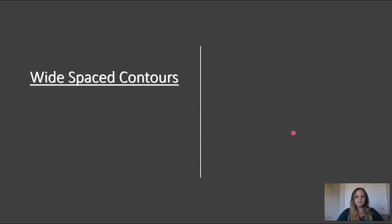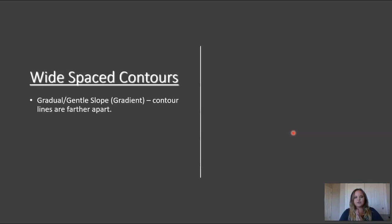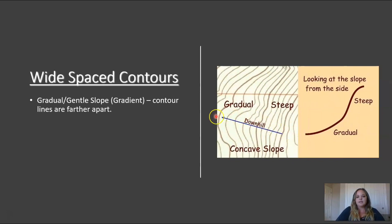Moving on to widely spaced contour lines — closely spaced contour lines show a steep slope, so widely spaced contour lines show that you are increasing in elevation over a long horizontal distance. We would see a gradual or gentle slope when our contour lines are further apart. Here on the left-hand side — potentially the west side — there's a contour line setup that is really far apart. Then once you get to a certain point, you see contour lines start to get closer and closer together, which means your elevation is changing drastically over a short distance — a steep slope. So we have a gradual slope first, and then a steep slope.